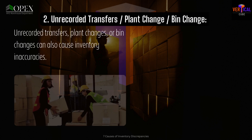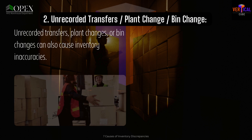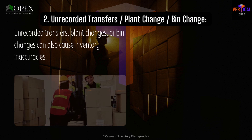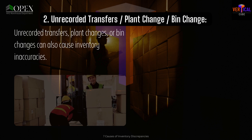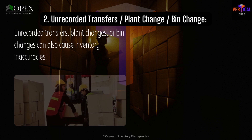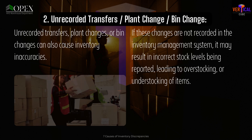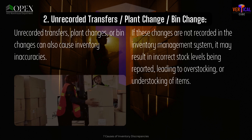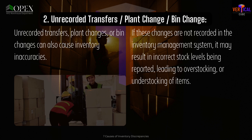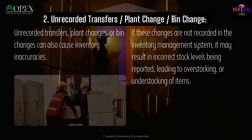2. Unrecorded transfers, plant change, bin change. Unrecorded transfers, plant changes, or bin changes can also cause inventory inaccuracies. If these changes are not recorded in the inventory management system, it may result in incorrect stock levels being reported, leading to overstocking or understocking of items.